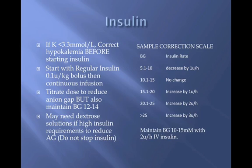Correct severe hypokalemia — levels below 3.3 mEq/L — before starting insulin. Otherwise, you can start insulin treatment along with fluid and electrolyte replacement simultaneously. Start with a regular insulin infusion. Blood glucose will respond quicker than the anion gap, and you may need to titrate up the insulin infusion to lower the anion gap even when blood glucose is at an acceptable level.